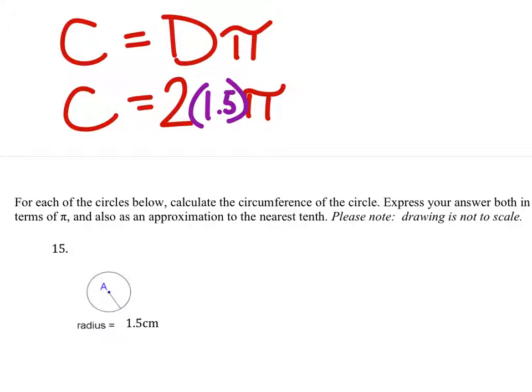It wants the exact value, which is in terms of pi, meaning I have 2 times 1.5, which is 3. 3 pi is one of the answers in centimeters.